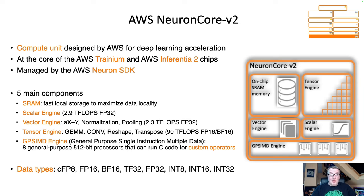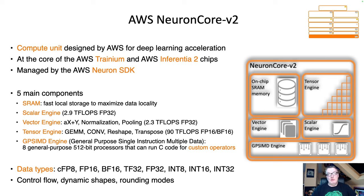Data types are really important. There's a long list: 8-bit, 16-bit, 32-bit, floating points, integers — I think we've got you covered. That's important because we know how critical those data types are for different use cases. Quantization is very hot, so there's a good selection of data types. There are some additional features around control flow, dynamic shapes, and rounding modes, which is a very important topic when working with smaller data types.